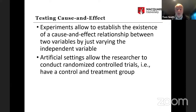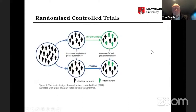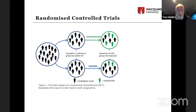We will talk more about that when we discuss capital market research. Going a little deeper into randomized control groups: you have a population on the left, and you randomly divide them into two groups. The control group at the bottom does nothing — you observe how many people find work. In the treatment group you do an intervention.